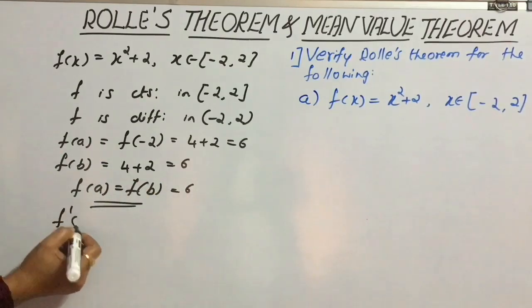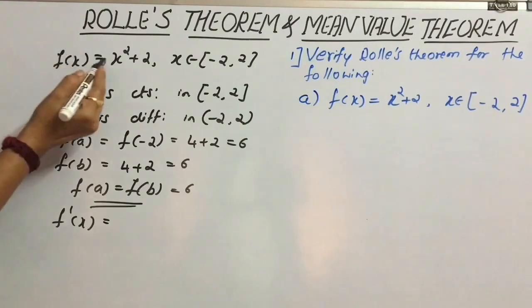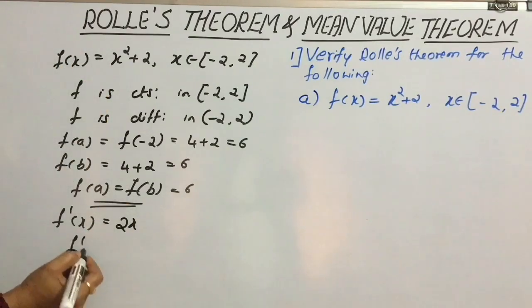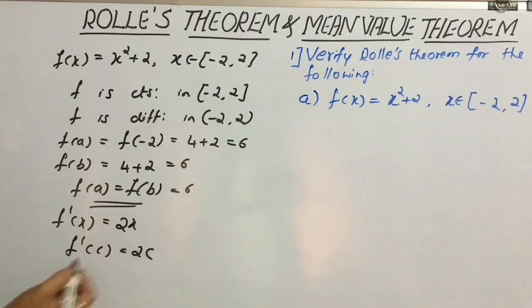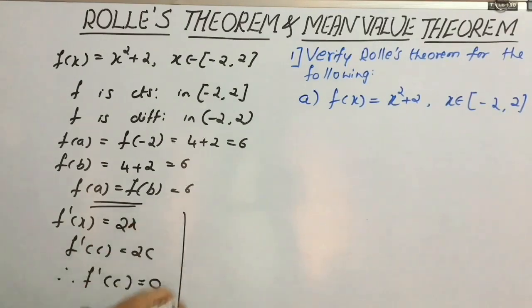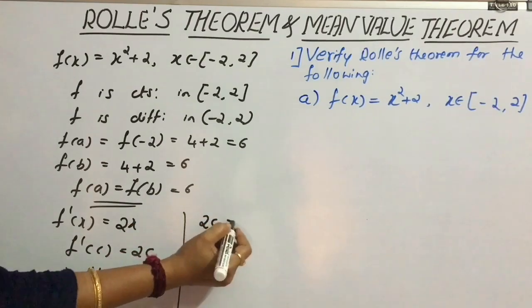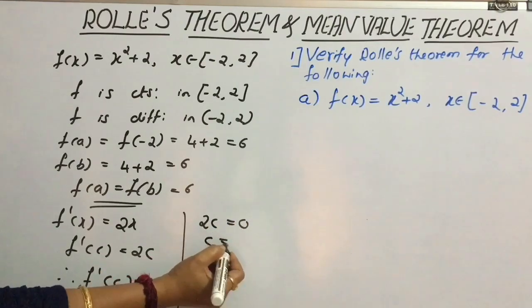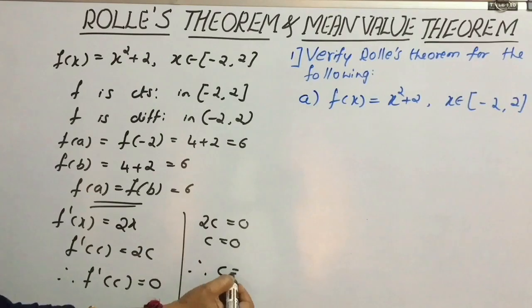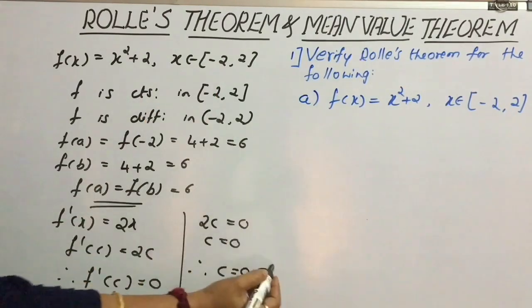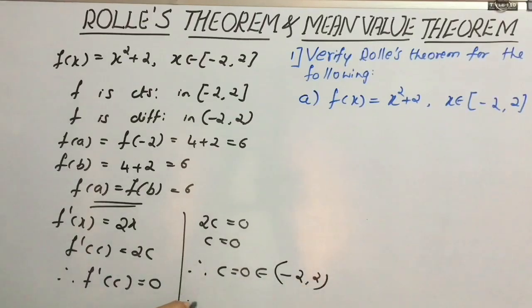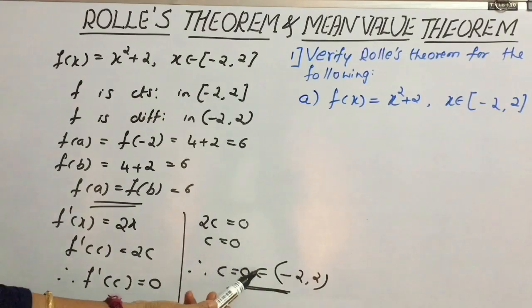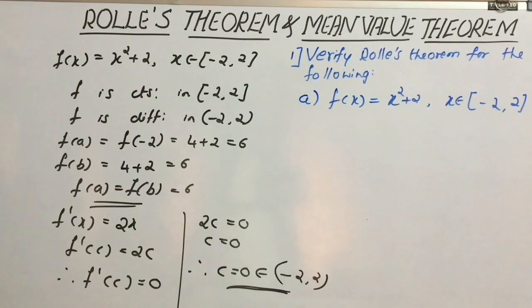Now consider the derivative f'(x) = 2x. Get f'(c) = 2c. Consider f'(c) = 0, that is 2c = 0, so c = 0. Therefore c = 0 belongs to the open interval (−2, 2). Therefore Rolle's theorem holds good. As c = 0 belongs to the open interval (−2, 2), we can conclude that Rolle's theorem holds good.